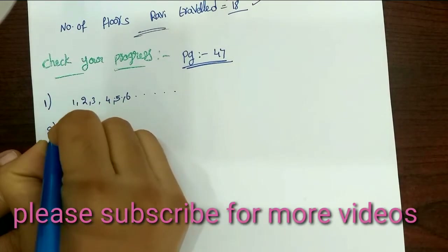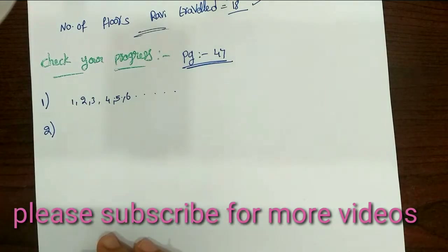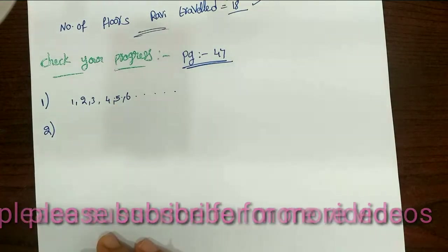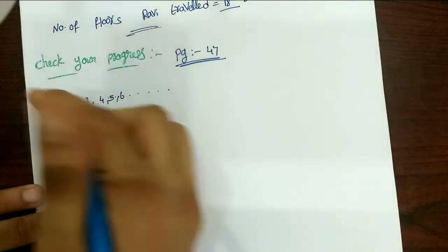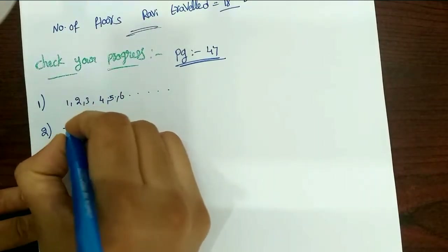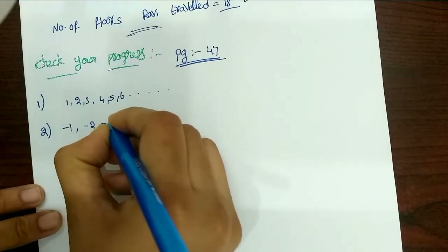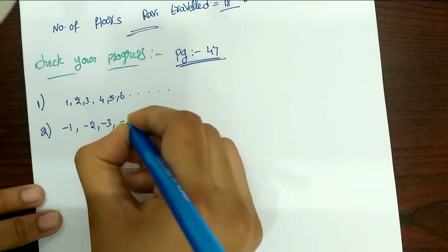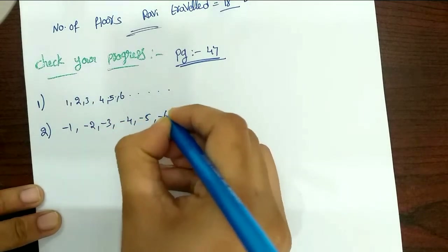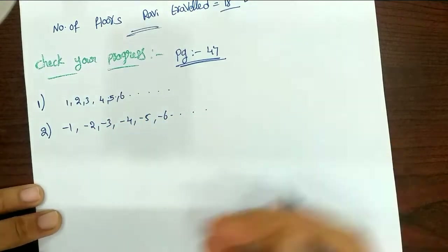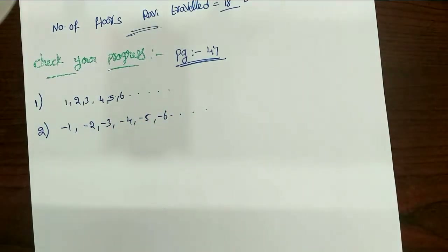Next, second question: write any 5 negative integers. For negative integers, you write them with a minus sign. So for example: minus 7, minus 8, minus 9, and so on. These are the negative integers.